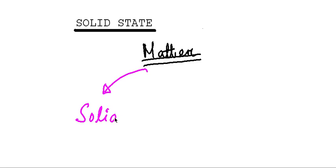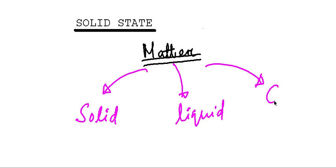Today we are going to start with the chapter solid state. As we all know, matter can exist in three different states: solid, liquid, and gas. We are all aware of the characteristic properties of solids, liquids, and gases. Before we start the chapter, let's list out those characteristic properties, with special focus on the characteristics of solids.